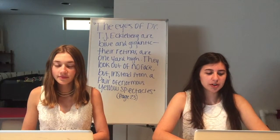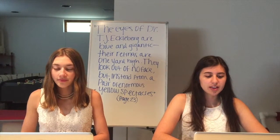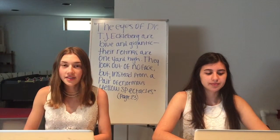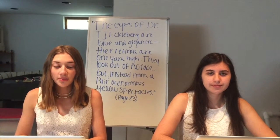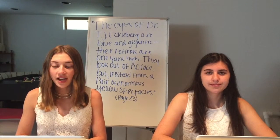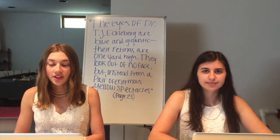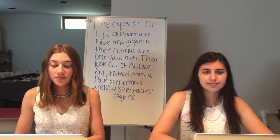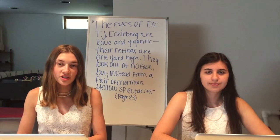The eyes of Dr. T.J. Eckleburg are blue and gigantic. Their retinas are one yard high. They look out of no face, but instead from a pair of enormous yellow spectacles. The eyes of Dr. T.J. Eckleburg symbolize the eyes of God. They do so because they are a giant pair of eyes looking out over a barren wasteland. Also, the Valley of Ashes is entirely gray, and the eyes are described as blue and gigantic. The pop of color in a colorless setting makes them important, but they can be related to religion because of how people talk about them — they mention always being watched by the eyes of Dr. T.J. Eckleburg.